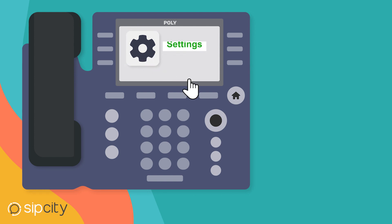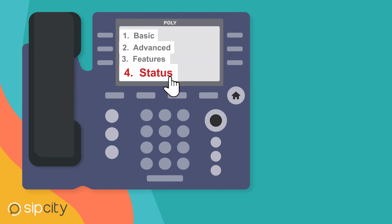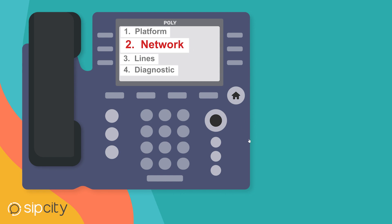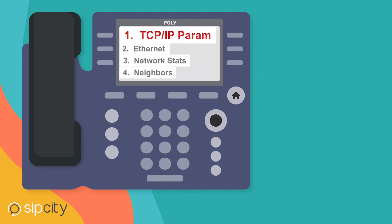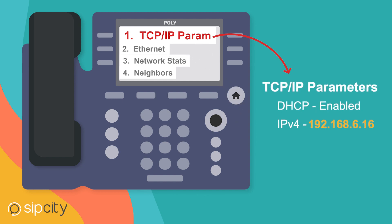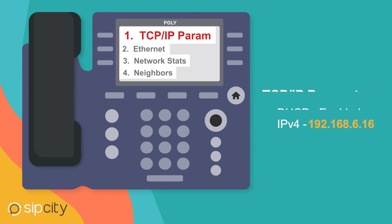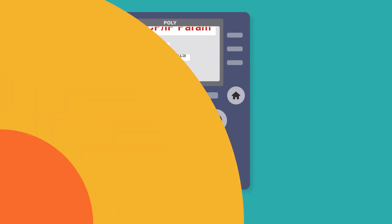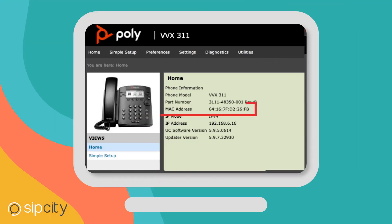Copy that IP address and jump onto your browser. The Polycom requires HTTPS to access the phone's UI, so in this example it's https://192.168.0.60.16. Copy the MAC address to your notepad, then jump across to Settings and then Provisioning Server.